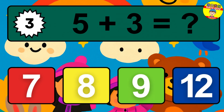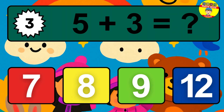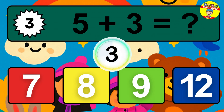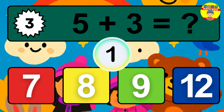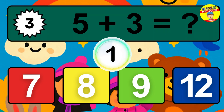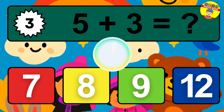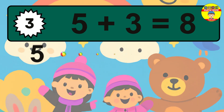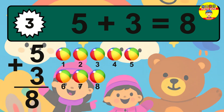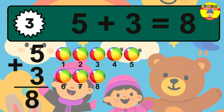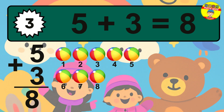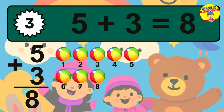Question 3. 5 plus 3 equals what? The answer is 5 plus 3 is 8. Let's count it: 1, 2, 3, 4, 5, 6, 7, 8.